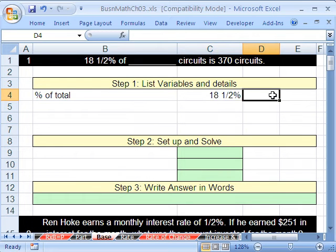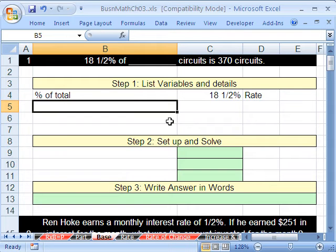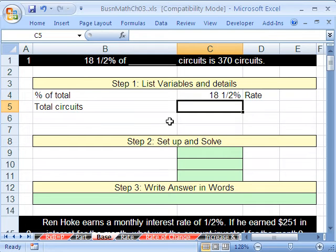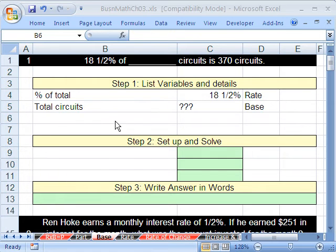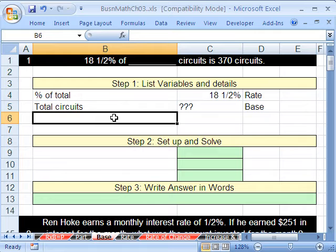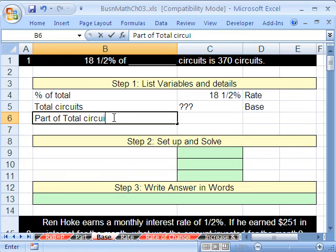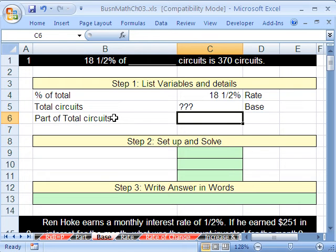So that's percentage of total, and that is called the rate. Next we have total circuits, and that is a question mark. And here we know this is the base. So here we'll put part of total circuits, and here we know what that is, so we'll put 370, and this is the part.